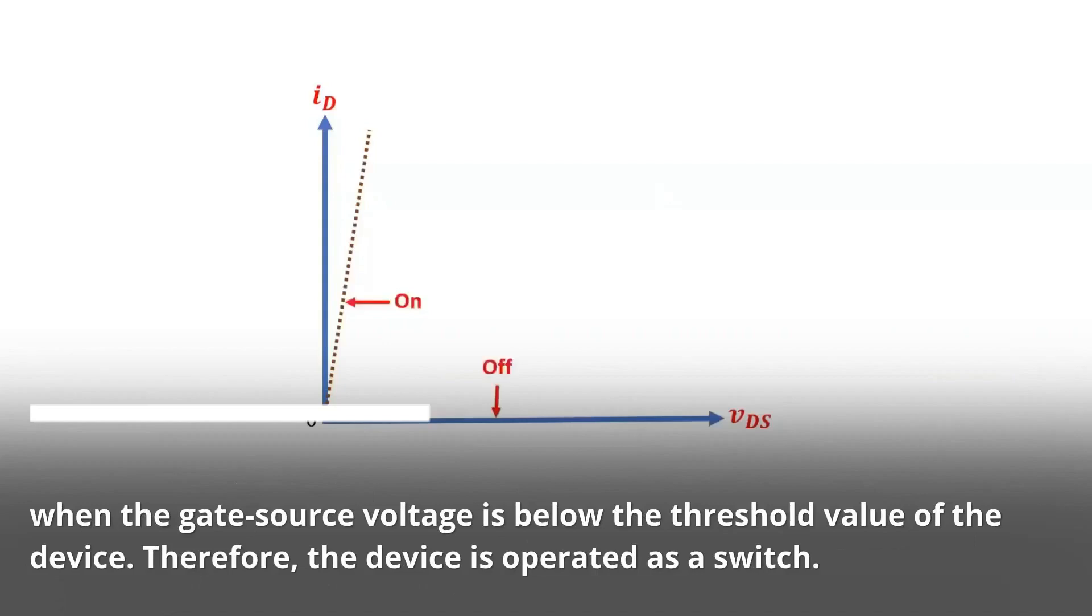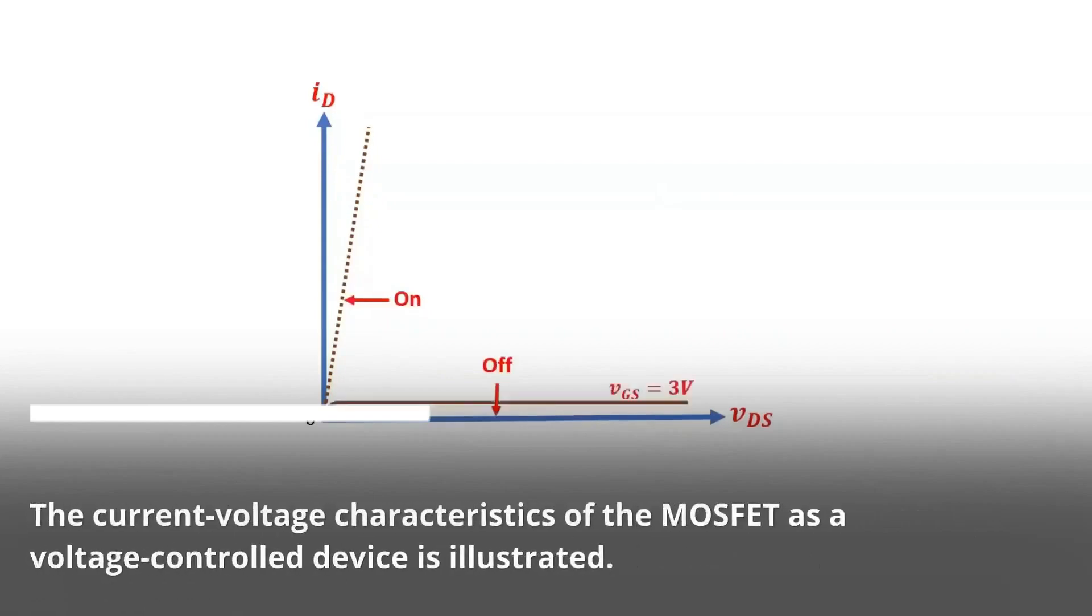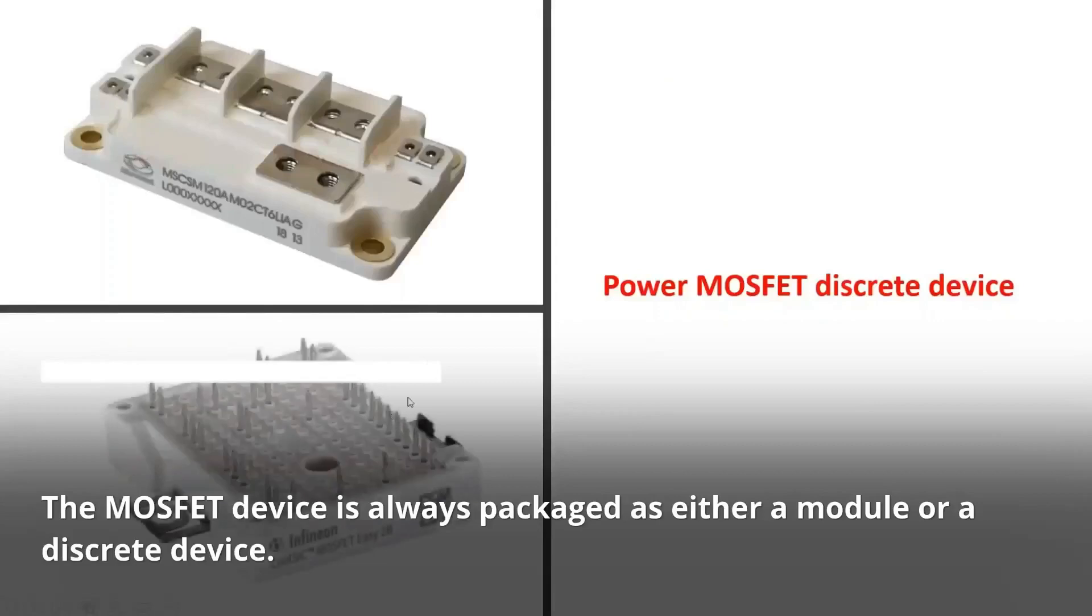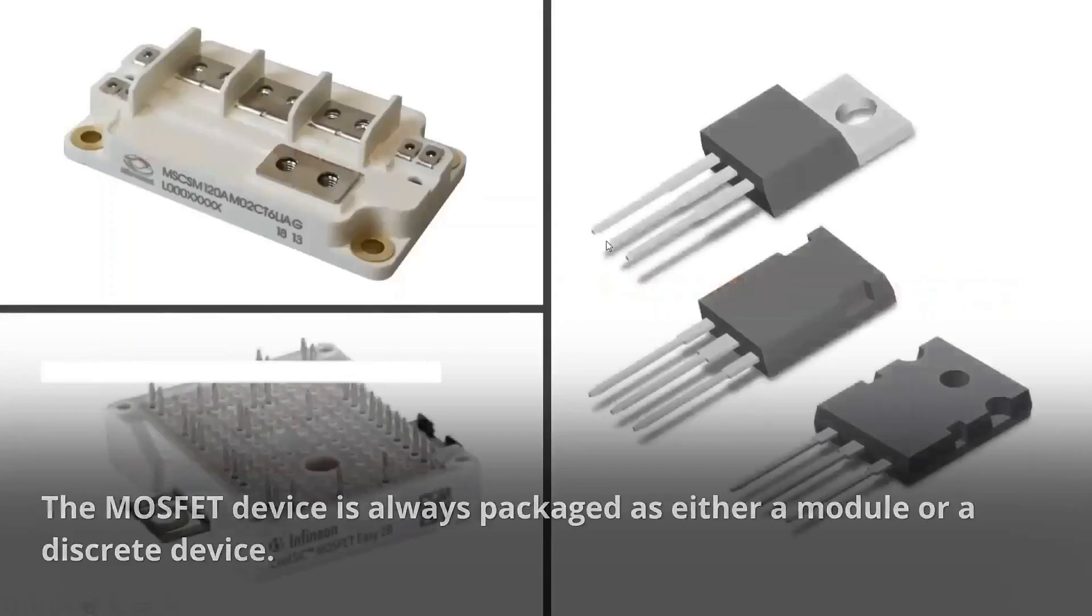Therefore, the device is operated as a switch. The current voltage characteristics of the MOSFET device is always packaged as either a module or a discrete device.